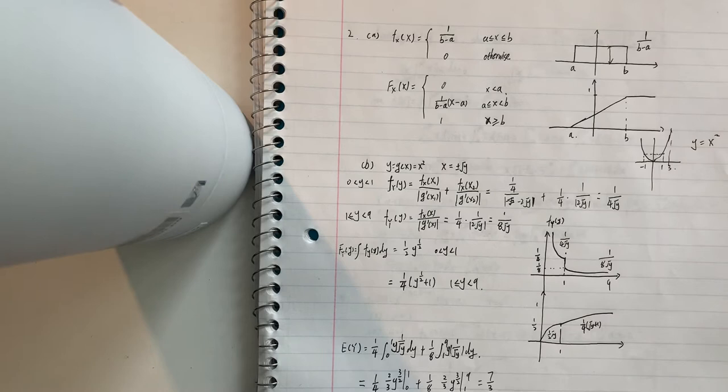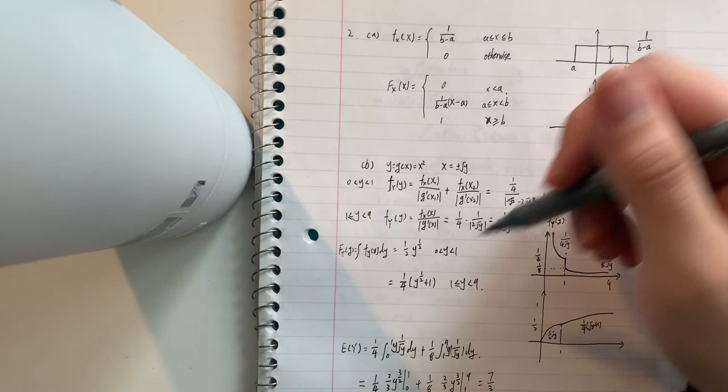And for the last one, we need to know the expectation of y. So we just use the expectation function and plug in the values of y. So we got the answer is 7 divided by 3.